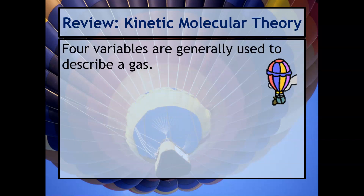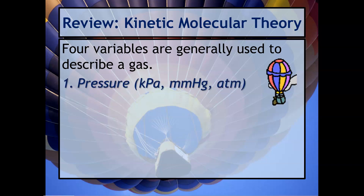There are four variables that we use to describe a gas. The first one is pressure. The units of pressure typically are kPa, which is kilopascals; mmHg, which is millimeters of mercury; or atm, which is atmospheres. The second is volume. Typically, the volume of a gas is reported in liters or milliliters.